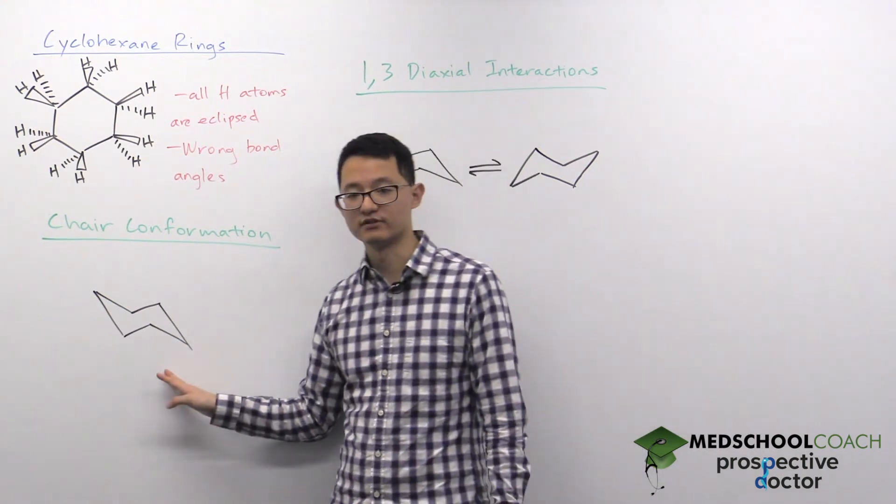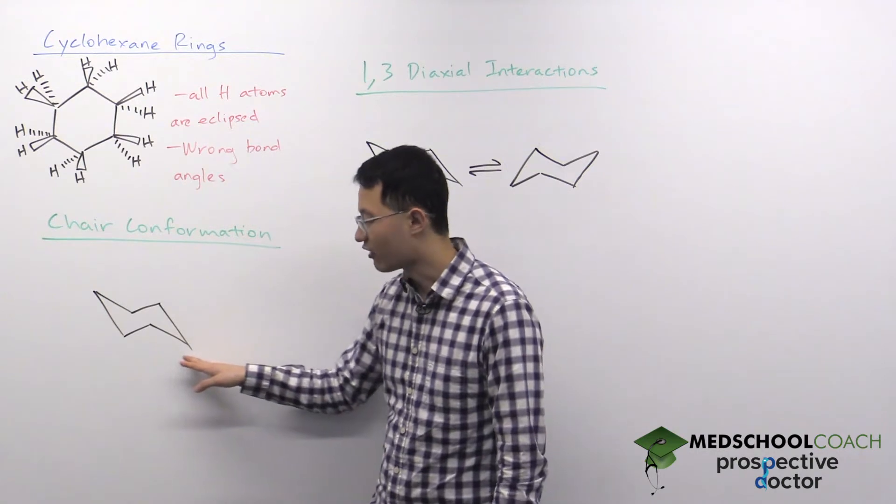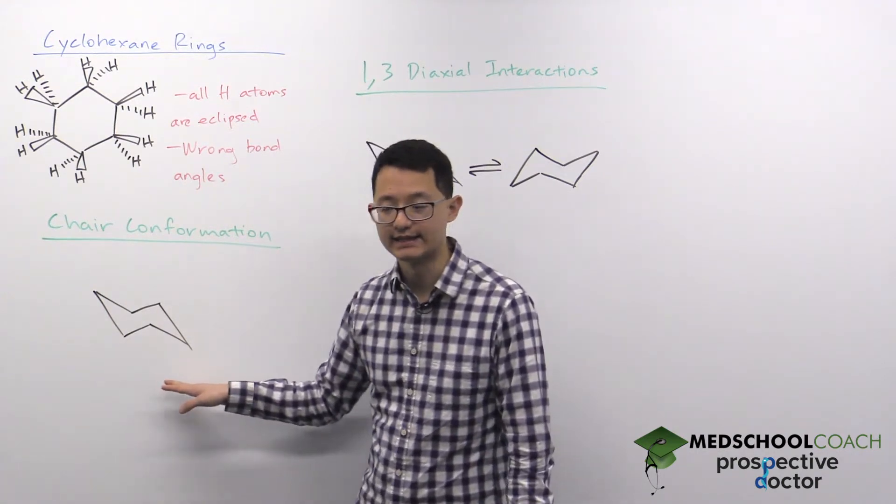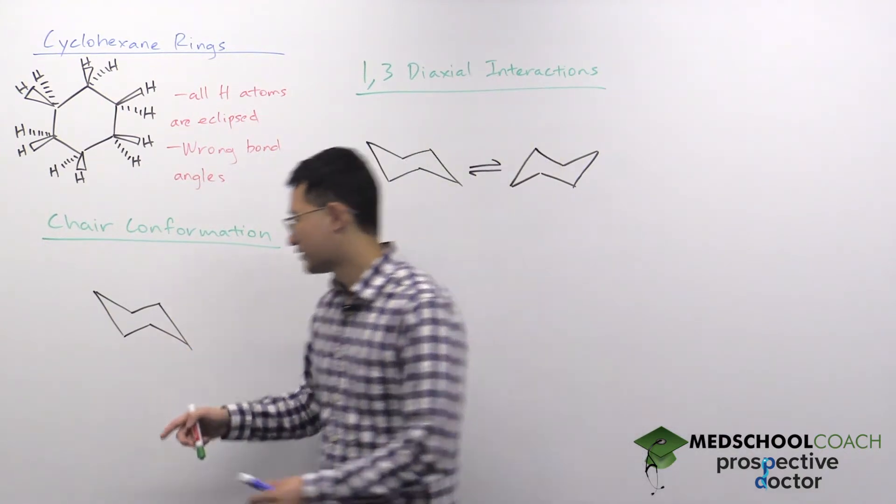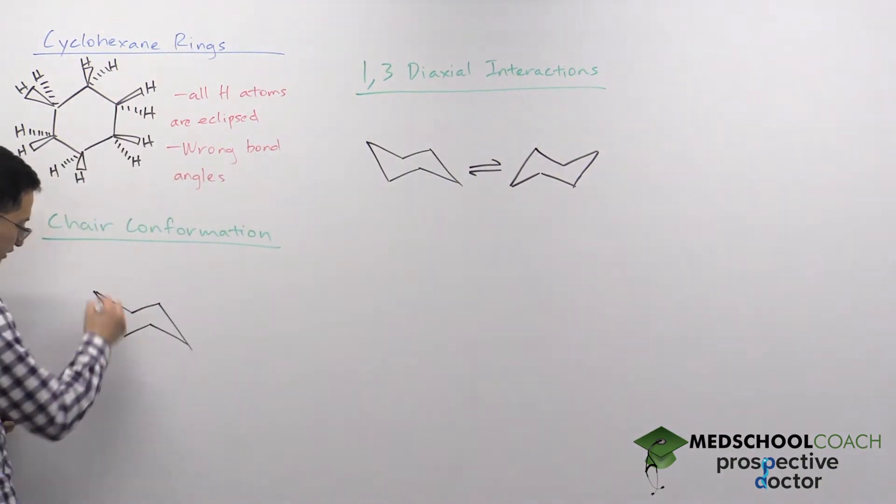A chair conformation looks like this, where you can see the six members are not in the same plane. We can go ahead and draw in all the hydrogen atoms.